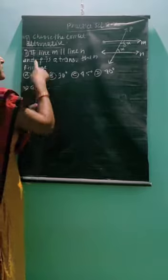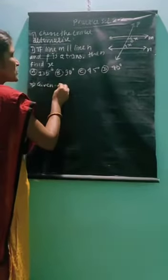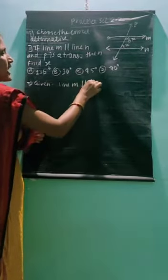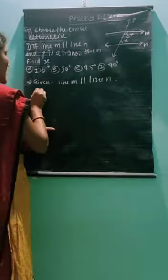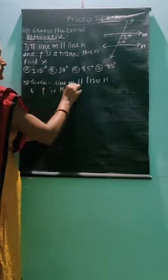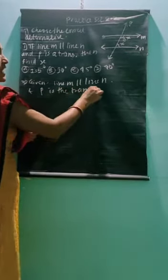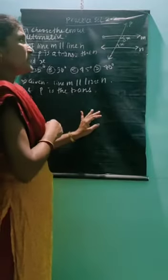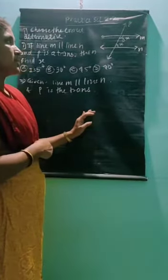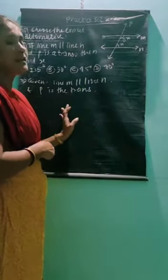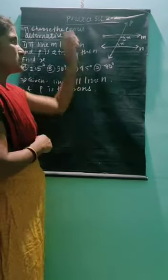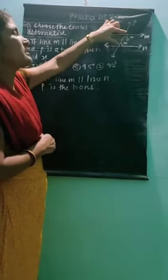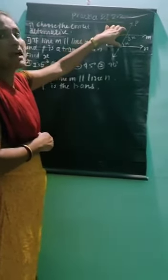First we write the given information. Line M is parallel to line N, and P is the transversal. Yesterday we learnt three types of different angles: corresponding angles, alternate angles, and interior angles. So which type of angles are 3X and X?